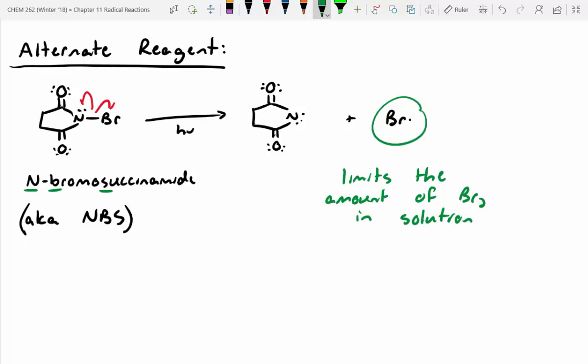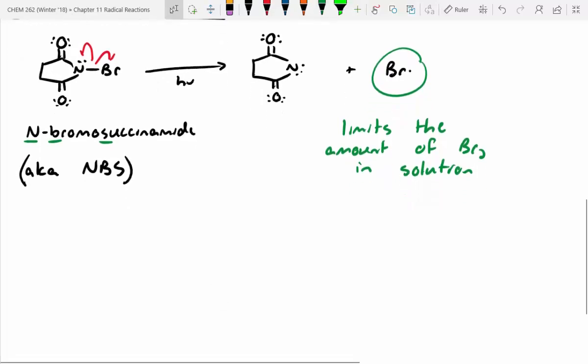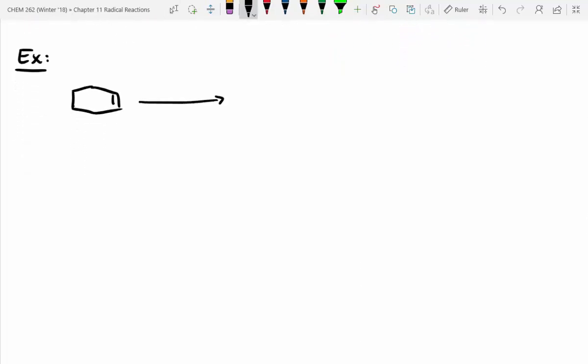Like I said, the nice thing with this is it limits the amount of Br2 in solution. Now that we've generated the radical, we can do the hydrogen abstraction and propagation step. So for example, with cyclohexene, if we treat this with NBS and UV light, we can attach a bromine onto that allylic carbon. And in this case, we do end up with a mixture of enantiomers. So that bromine can add to the top face or the bottom face. It's important to remember that those radicals are trigonal planar, and so you lose your stereochemistry off of that carbon.